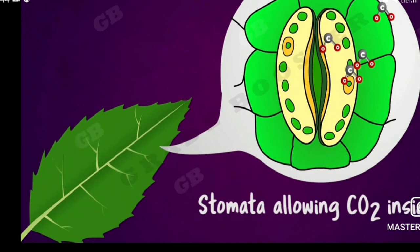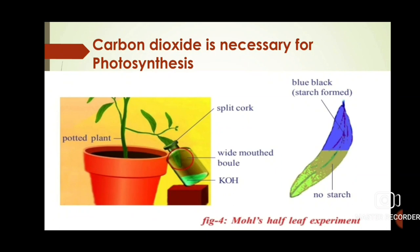Let us now look at another topic: Does carbon dioxide is necessary for photosynthesis? Take a potted plant with long narrow leaves and place it in a dark room for 7 days. After 7 days, take it into sunlight. Take a split cork and place it on the leaf, then attach a wide-mouthed bottle with a KOH solution. Potassium hydroxide will absorb carbon dioxide from the leaf inside the bottle. Place it for 4 to 5 hours in sunlight.